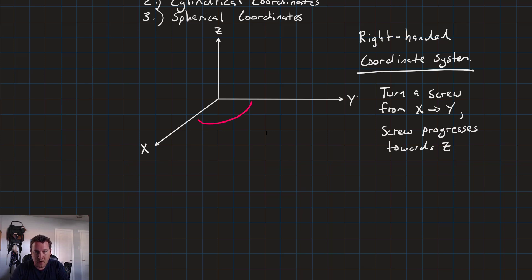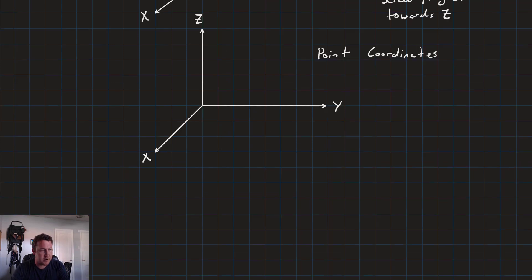And the reason it's called right-handed is that if we draw or imagine that we're turning a screw in the direction that is from x to y, then that screw will progress up the z-axis. And so, when it's set up like that, that's why it's called the right-handed coordinate system.